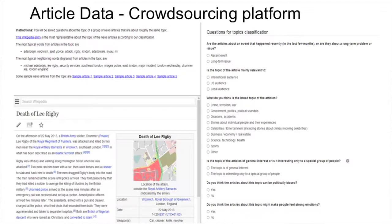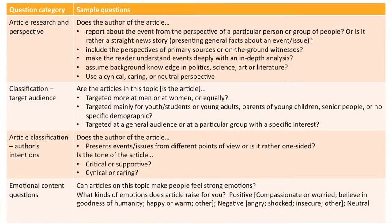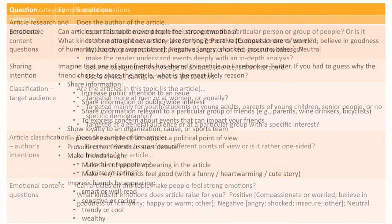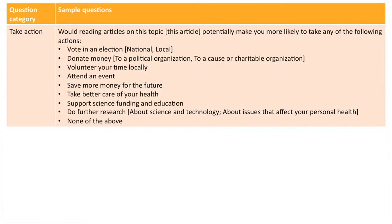We have a crowdsourcing platform where we ask people for the topics. We give them examples of articles, show them a Wikipedia article if one exists, and then give them lots of questions. Some examples of the questions we ask: are the articles politically biased about a recent event? Is this politically, ethically, or socially controversial? Is it an opinion article? Does it have in-depth research? Would reading articles on this topic make you want to vote or donate money? We get this by having hierarchical questions so you don't overwhelm the workers.